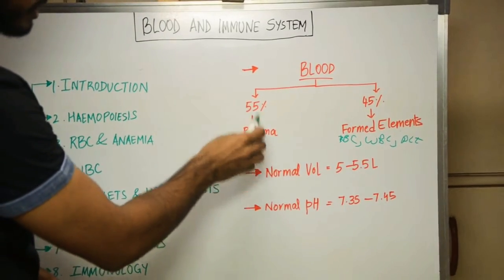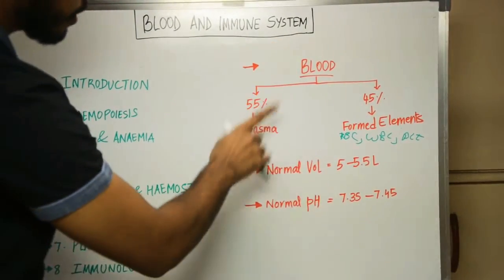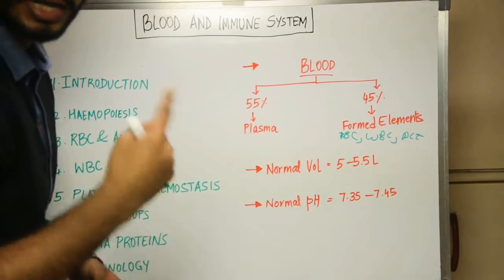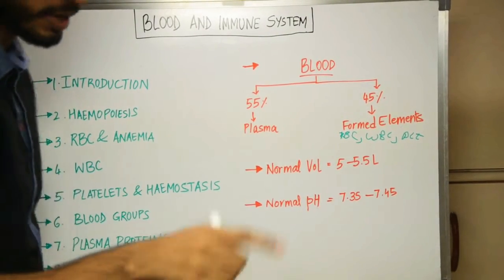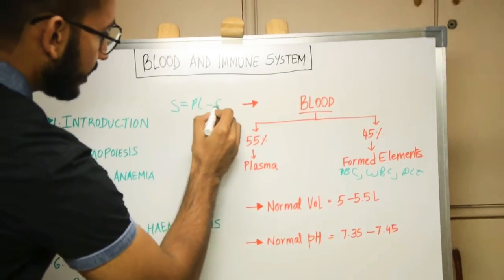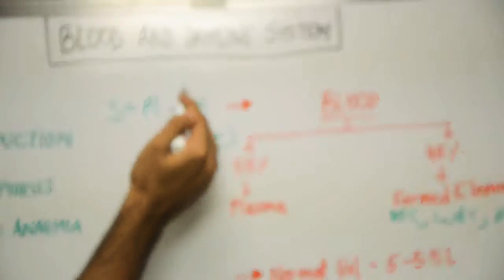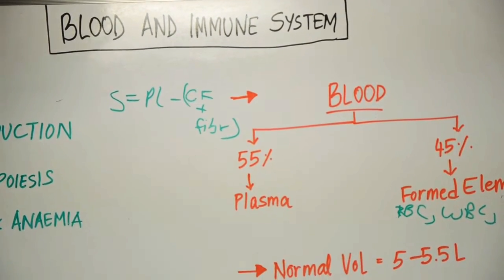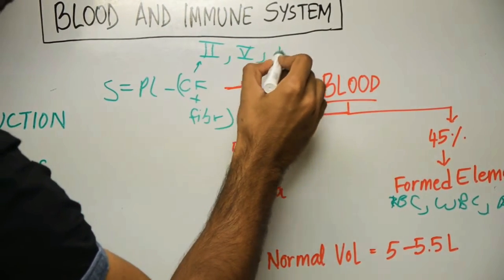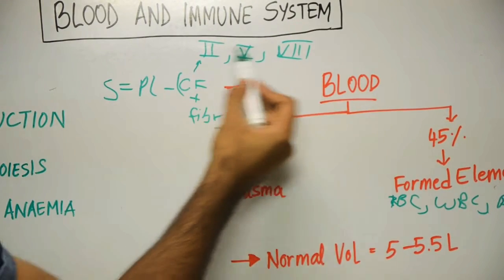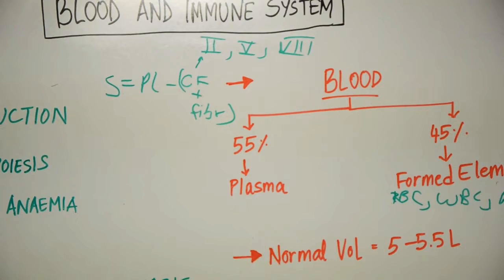There's another term called serum. The difference between plasma and serum: plasma contains various plasma proteins including clotting factors and fibrinogen. Serum equals plasma minus clotting factors plus fibrinogen. Specifically, clotting factors 2, 5, and 8, along with fibrinogen, are removed from plasma to get serum. That is the only difference between plasma and serum.